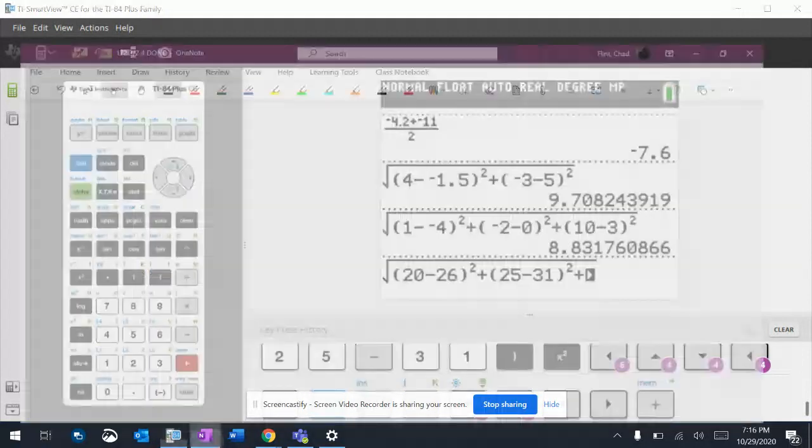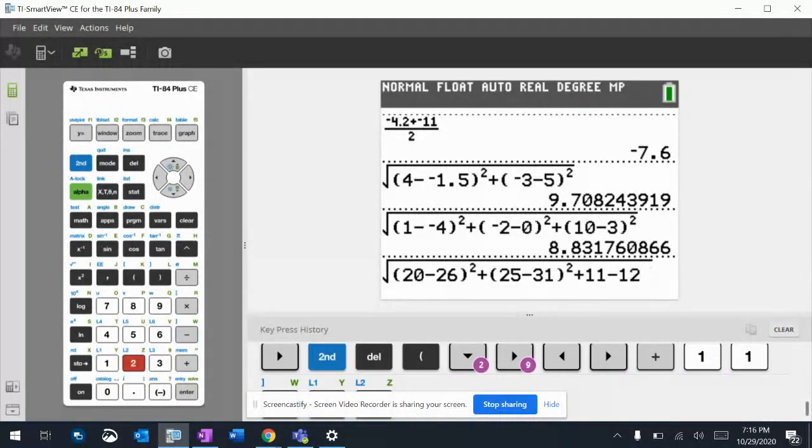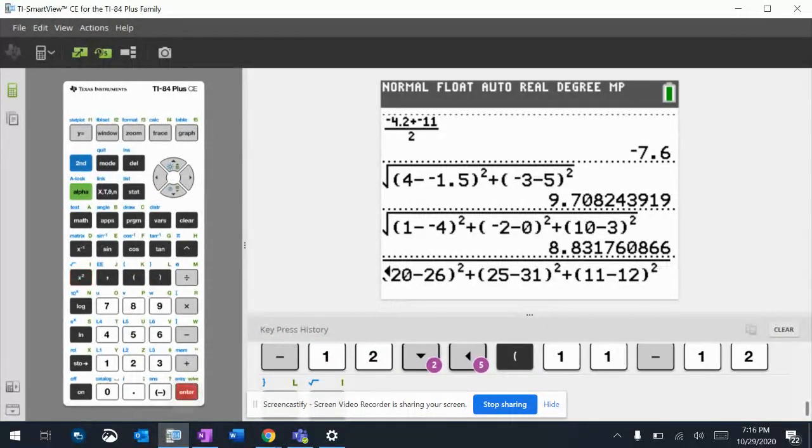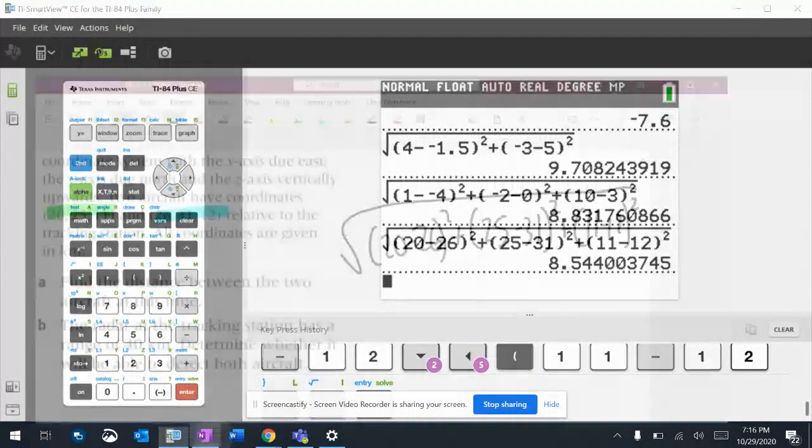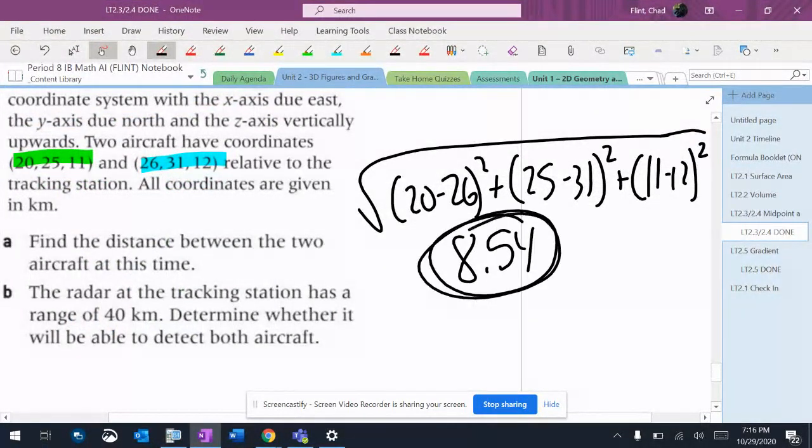11 minus 12 squared. There we go. So 8.54 is the distance between those two things.